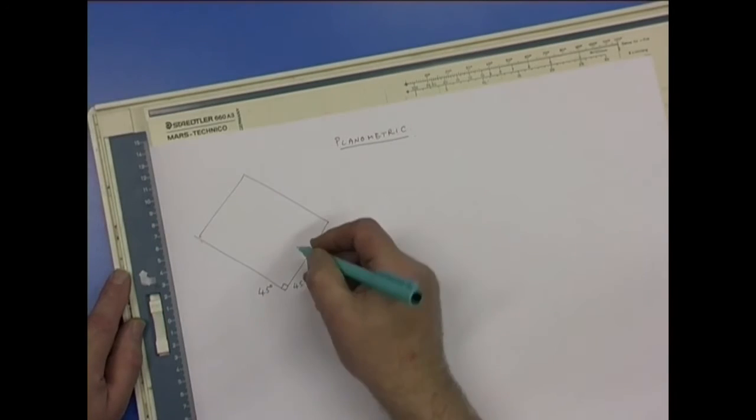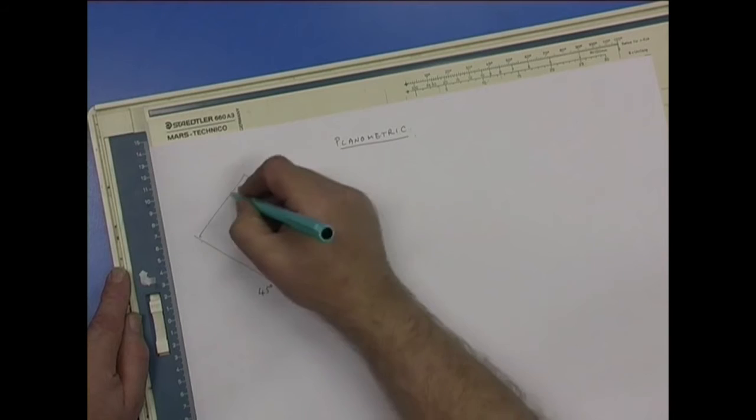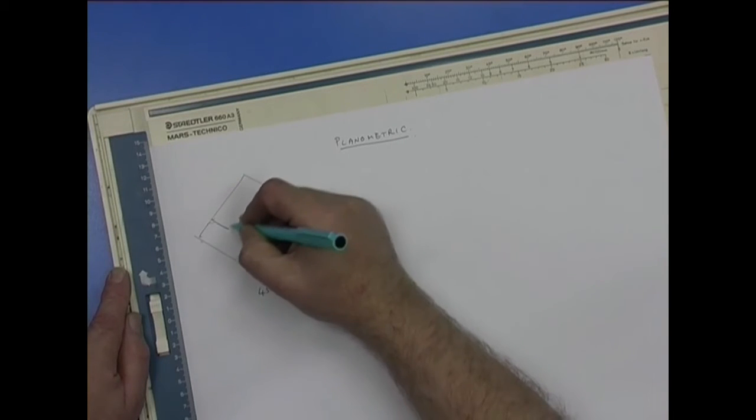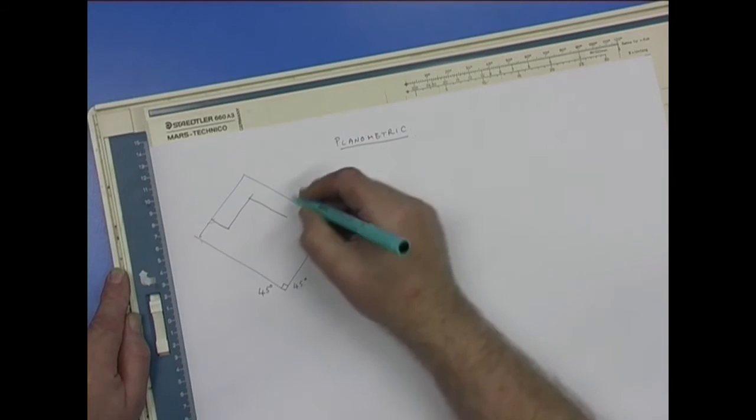Now it could be a kitchen with small pieces of furniture in it, and it could have worktops. You would draw your L-shaped unit.